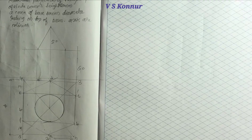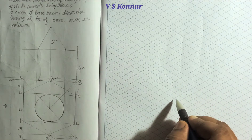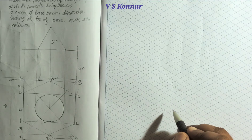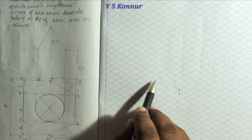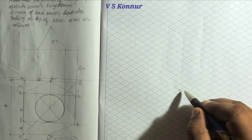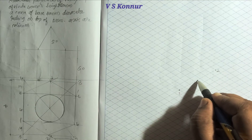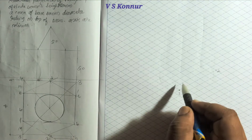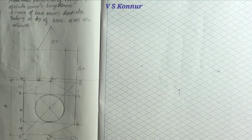Now we have to transfer the total hexagonal shape to isometric. Measure the total length from 4 to 1 or from 2 to 3 - the total length is 78mm. The distance from 3 to 4 is 70mm. Mark a point anywhere in the isometric sheet. From point 1, the right side is 2 (70mm = 7 boxes) and the left side is 4. 78mm is close to 80, so we mark it as point 4.